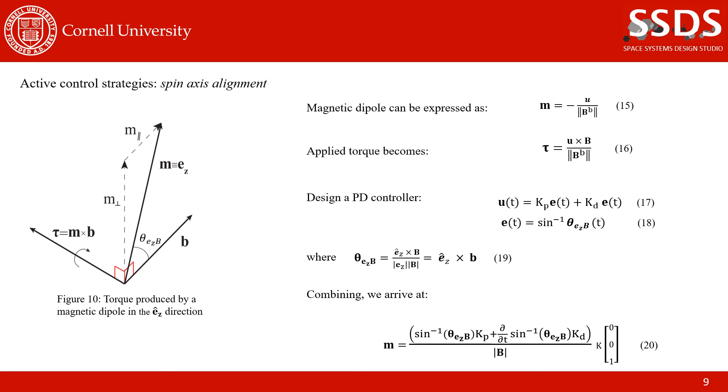Once the spacecraft is spin stabilized, we can now align the spin axis with Earth's magnetic field. The magnetic dipole consists of the control input over the magnitude of the external field and body coordinates. We can get the applied torque and obtain the control input from a simple PD controller. Here, kp and kd are the proportional and derivative gains, and e of t is the local relative attitude error, the angle in between the ez and b vectors. Combining, we obtain the magnetic dipole as shown at the bottom, where k is plus or minus 1 depending on the direction of the angular velocity. We implement the magnetic dipole along the spacecraft's z-axis. As seen in Figure 10, doing so produces a torque perpendicular to both the spin axis and the external magnetic field vector. Due to the variation of Earth's magnetic field along the orbit position, this torque has no effect on the spin rate and will tend to precess the spin axis around the magnetic field lines. This precession will slowly make the spin axis parallel to Earth's magnetic field. At this stage, the magnetic dipole will be generated using only the magnetorquer parallel to the spin axis.